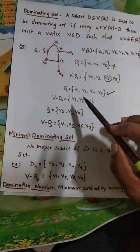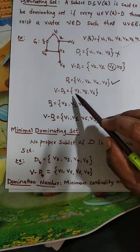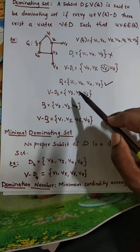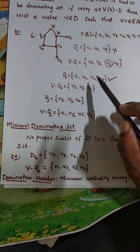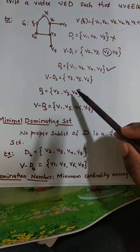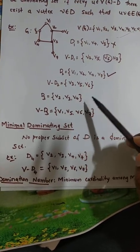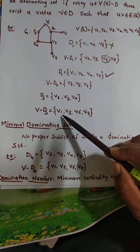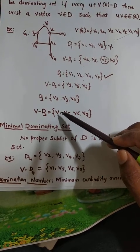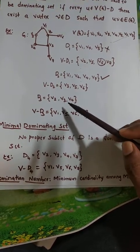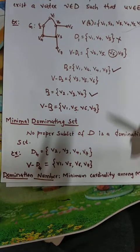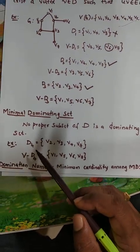V6 is adjacent to V2, which is present in D2. Therefore, D2 is a dominating set — for every vertex in V minus D2, there exists at least one adjacent vertex in D2. Next, consider D3 = {V2, V3, V4}. Its complement is {V1, V5, V6, V7}, and you can verify that each of these is adjacent to at least one vertex of D3. Therefore, D3 is also a dominating set.